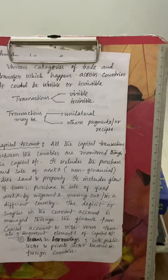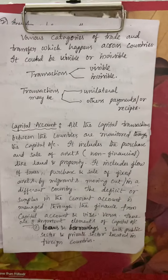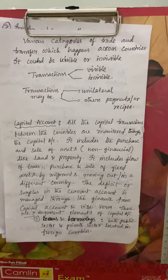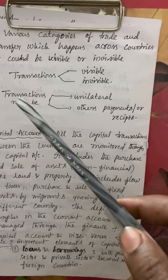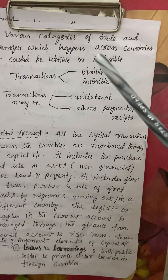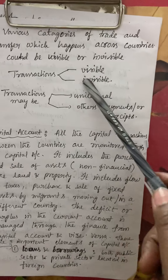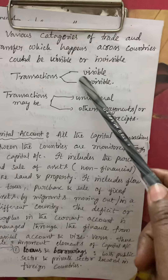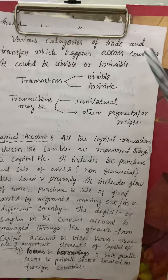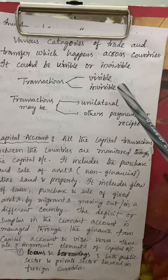Visible items include machinery, raw material, or technology — whatever goods you are importing into the country or exporting to other countries. These are called visible transactions.